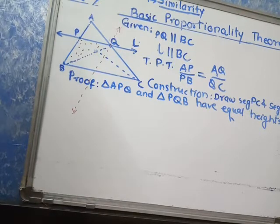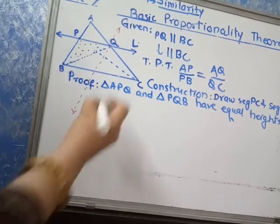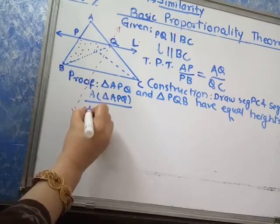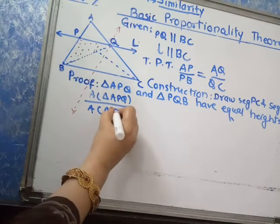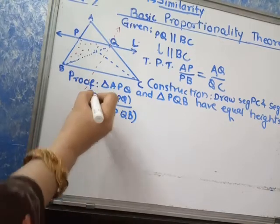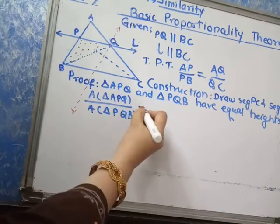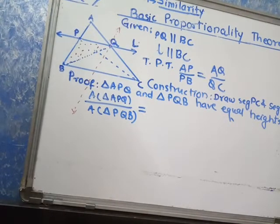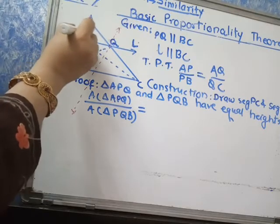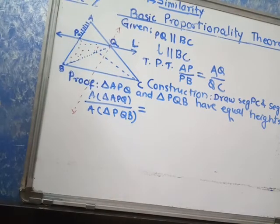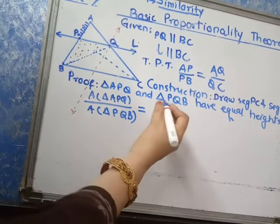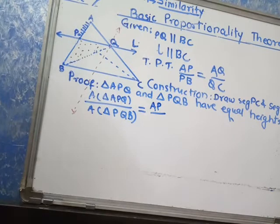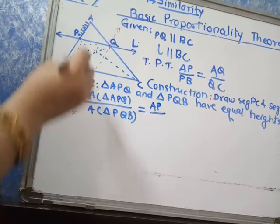Therefore, the ratio of areas of the two triangles, that is area of triangle APQ divided by area of triangle PQB, is equal to the ratio of their corresponding bases. And the corresponding bases are base of triangle APQ is AP and base of triangle PQB is PB.